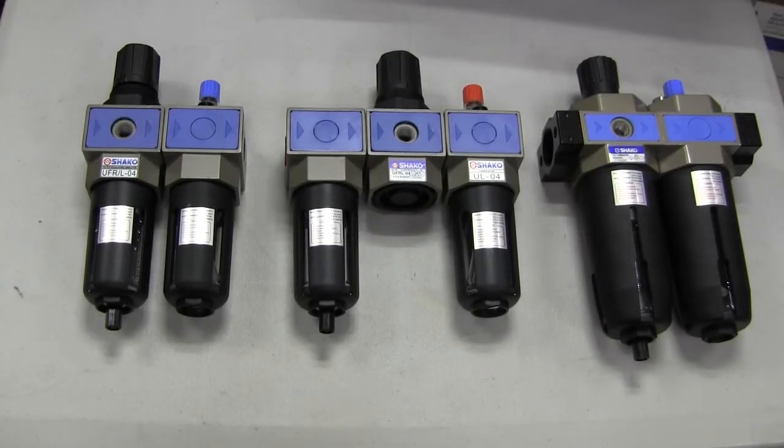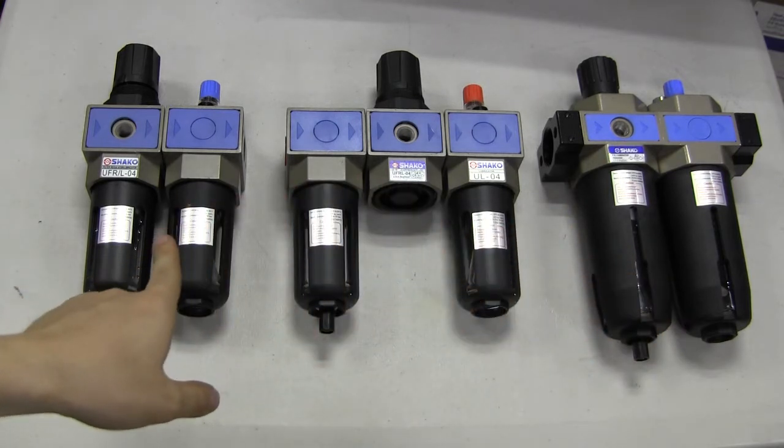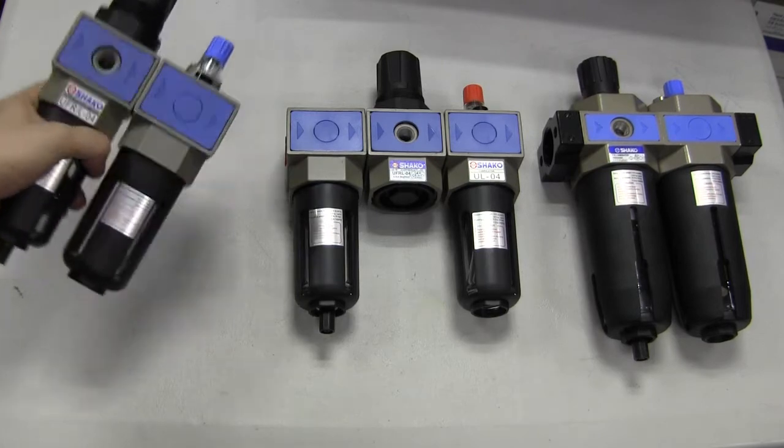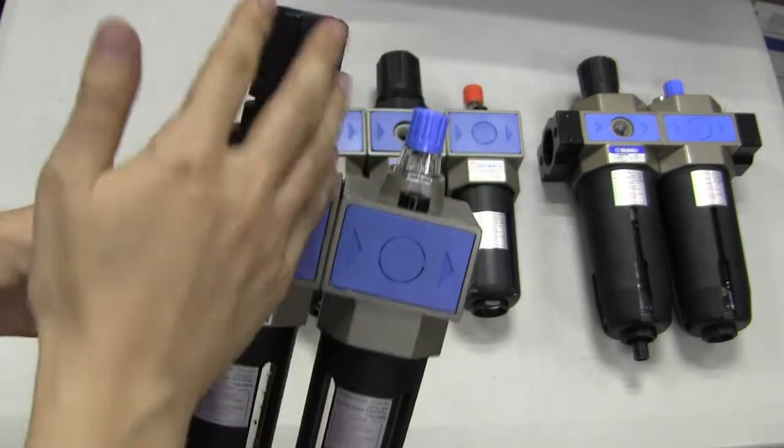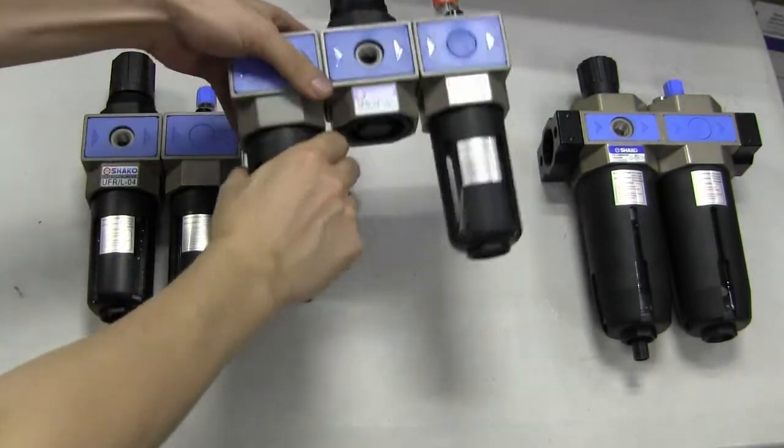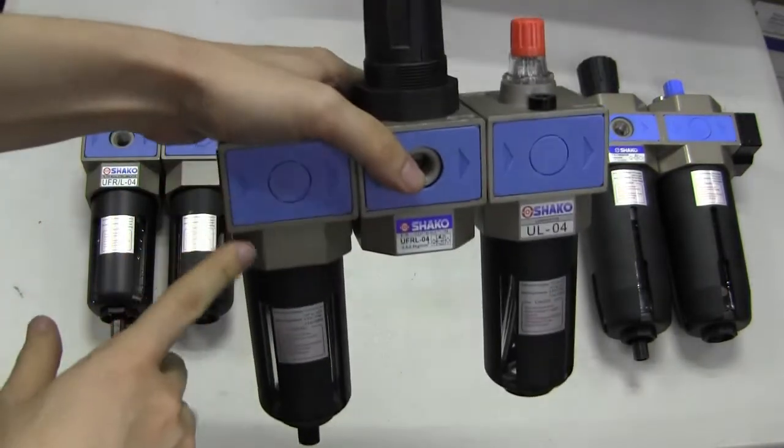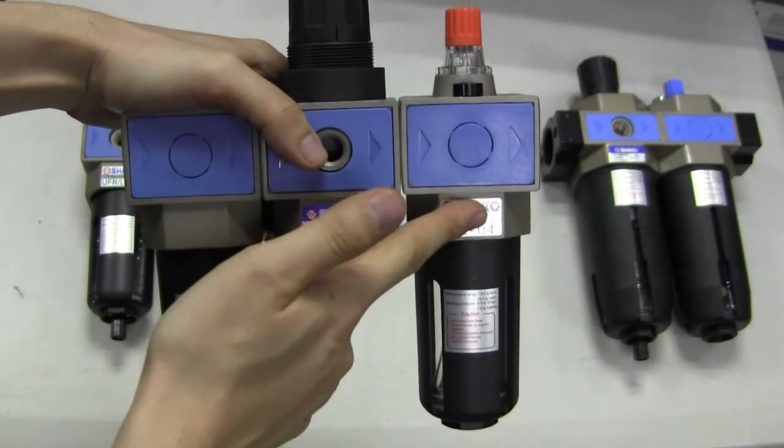What we have here are different models of Shako's FRL - filter regulator and lubricator. We have here the two-piece type, meaning the regulator and the filter are in one body. And we have here a three-piece type, meaning the filter and the regulator are separate, and here's the lubricator.